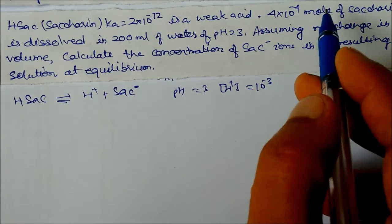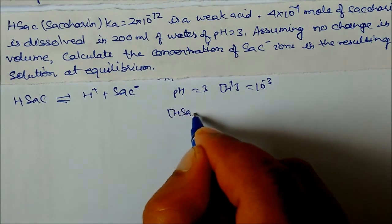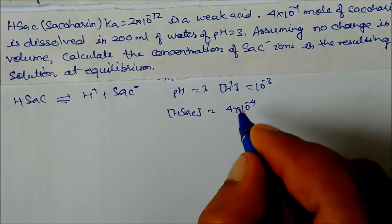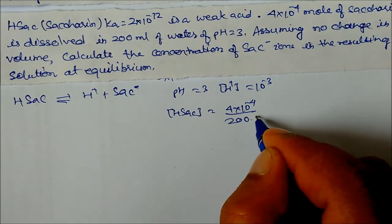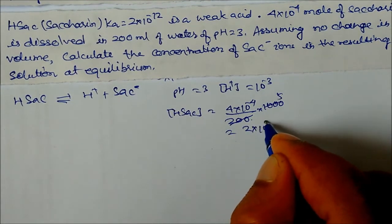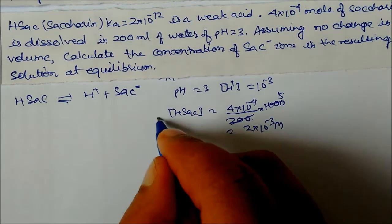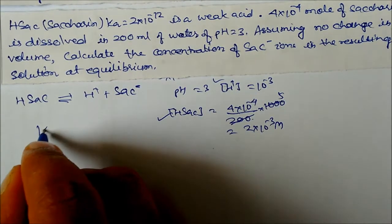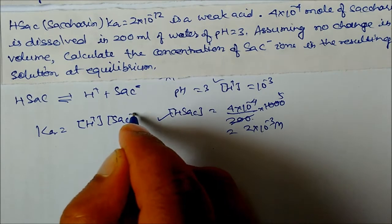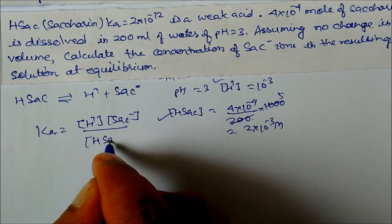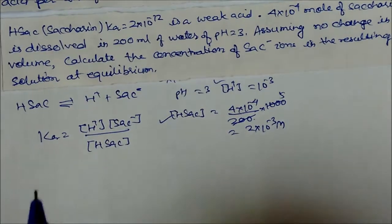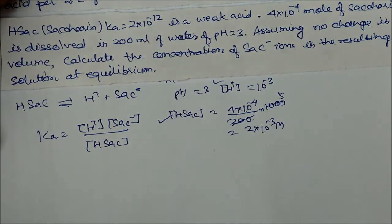The concentration of HSac: 4×10⁻⁴ mol dissolved in 200 mL, so divide by 0.2 L to get 2×10⁻³ mol/L. Ka = [H⁺][Sac⁻]/[HSac]. Every value is given: Ka = 2×10⁻¹², [H⁺] = 10⁻³, [HSac] = 2×10⁻³. So we can solve for [Sac⁻].